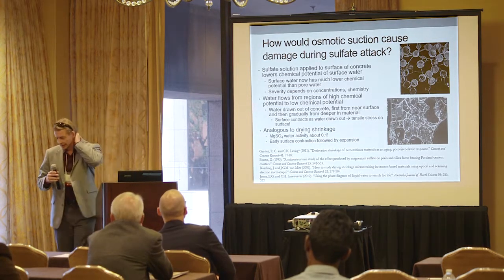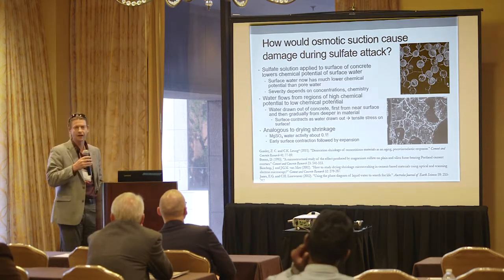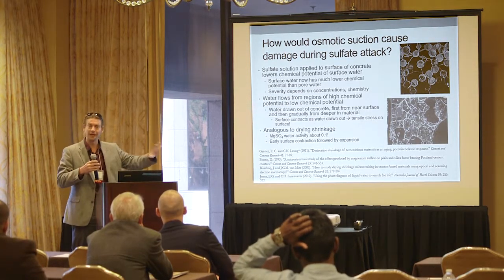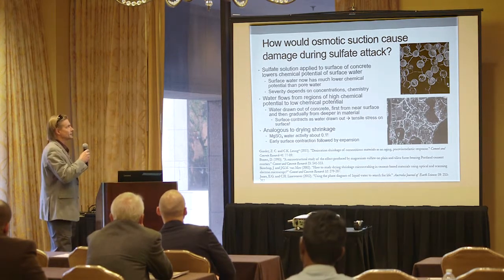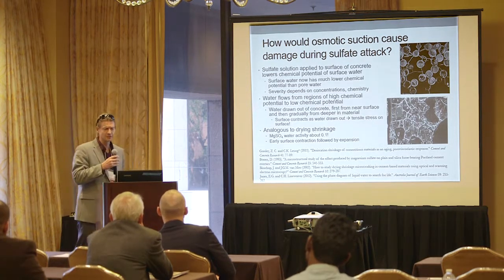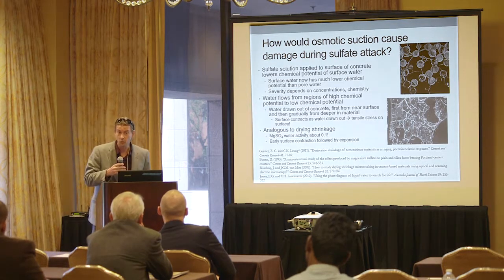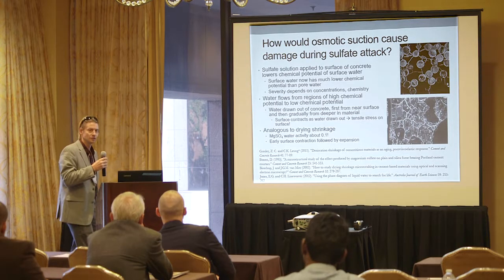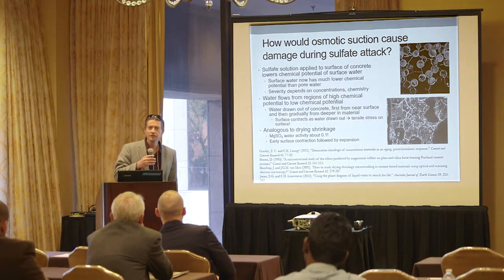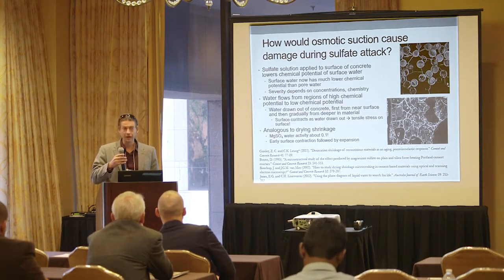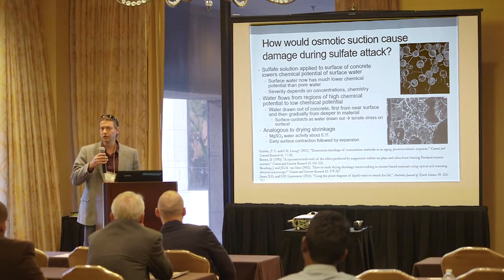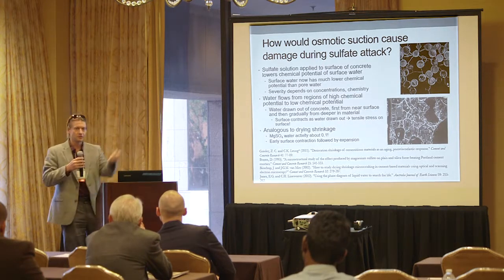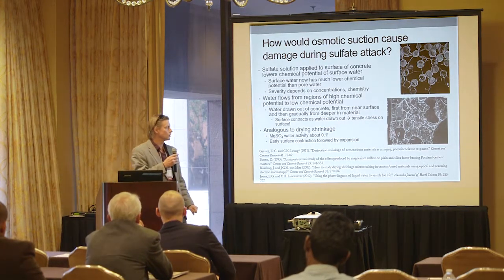Just as a bit of an aside, this concept of water-driven flow due to chemical potential gradients is exactly how your cells migrate in your body. And that's why you'll die if you don't have salt — all the doctors tell you to cut down on salt, but don't forget you'll die without it. So how would this cause damage during sulfate attack? When you apply a sulfate solution to the surface of your concrete, you dramatically lower the chemical potential of the surface water, such that it becomes lower than the chemical potential of the water inside the concrete, drawing water out. It's the same reason that concrete dries and you get shrinkage stresses — it's completely analogous to early drying shrinkage.